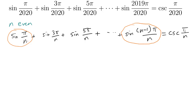What summations do we know how to evaluate? We know arithmetic and geometric series. Here we don't directly have either — but we kind of have an arithmetic sequence inside the sine: pi over n, 3 pi over n, 5 pi over n, and so on. If the angles form an arithmetic sequence, we can turn this into a geometric sequence by using complex exponentials — specifically Euler's identity: e to the i times theta equals cosine theta plus i sine theta.